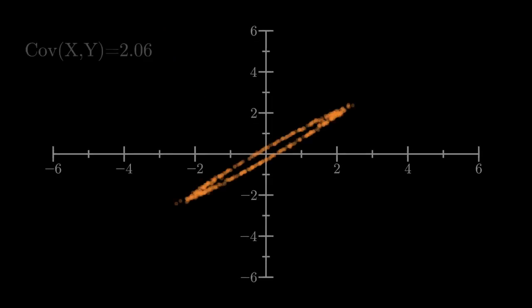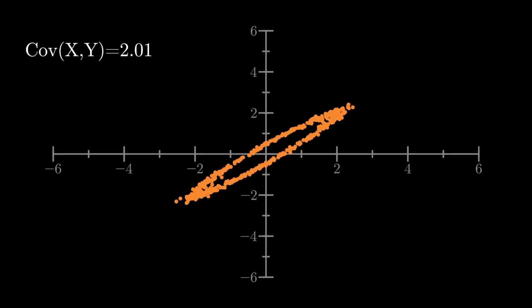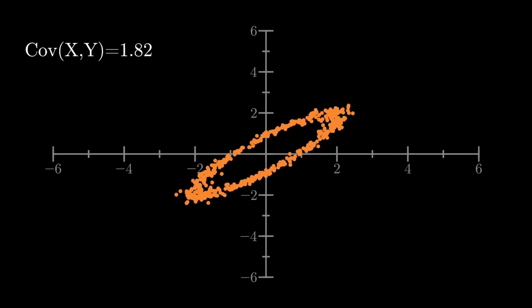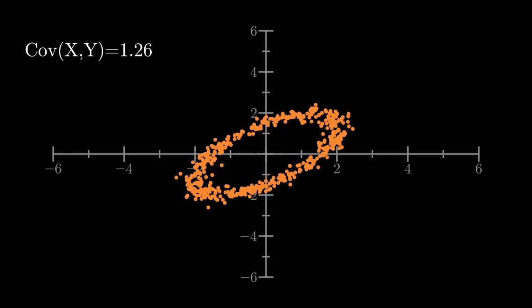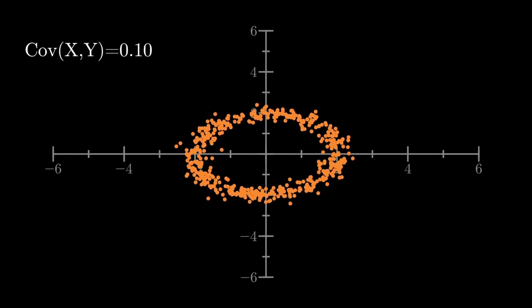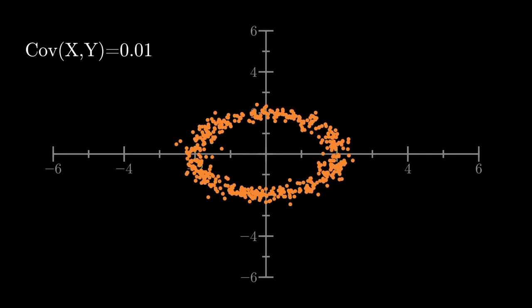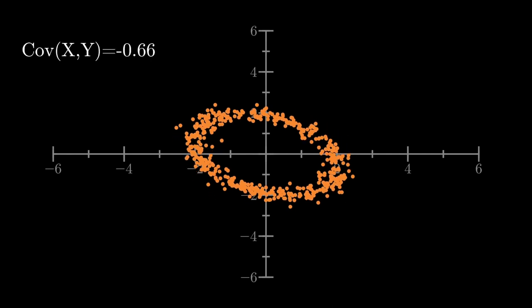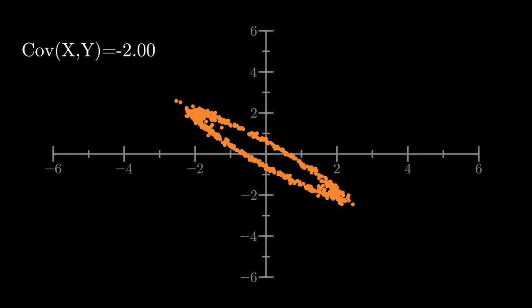Now a word of warning: covariance only captures linear dependence. Just because something has a covariance of zero does not mean that the random variables are independent. Here I've constructed a slight twist on the cloud from before, making it a donut instead of a blob. When it's stretched out and thin, it still has a non-zero covariance. But notice when the donut becomes nearly symmetric, the covariance almost goes to zero. However, in no way are these two dimensions independent. If I tell you that the X-dimension is zero, you know that with high probability the Y-dimension is near negative two or positive two. But if I tell you that the X-dimension is negative two, then you know that the Y-dimension is close to zero. So clearly these random variables depend on each other, but the covariance is very close to zero. It's because their dependence is not a linear dependence.